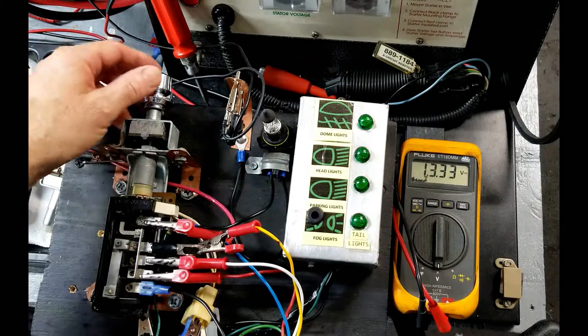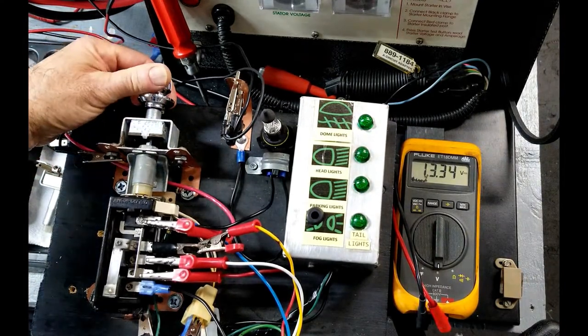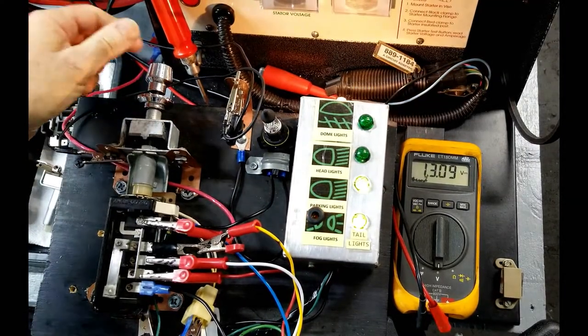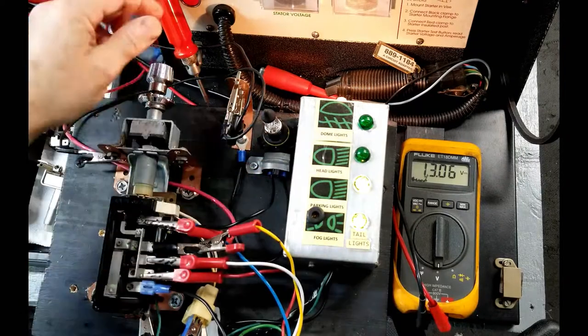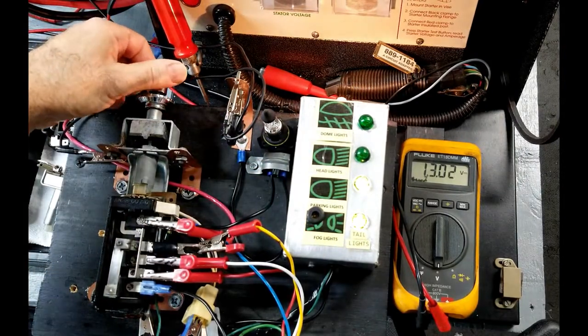Next test we'll be conducting is a dash light dim and bright control. First position, parking lights. Next test, we're going to rotate the rheostat and dim the dash lights.